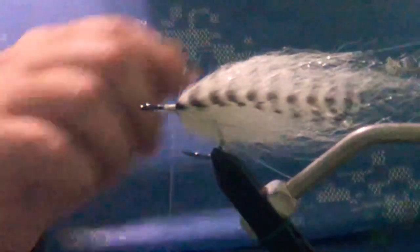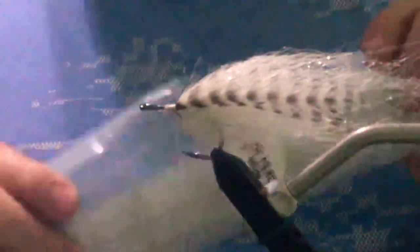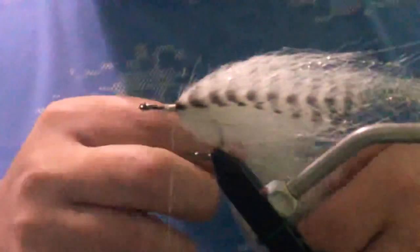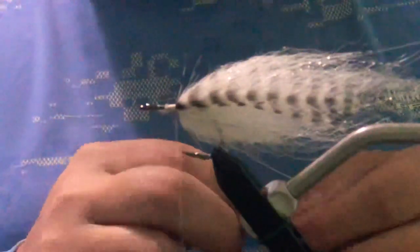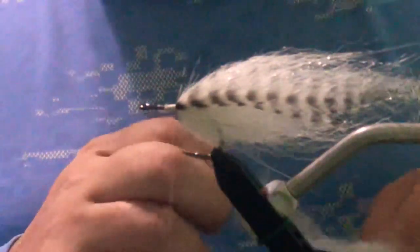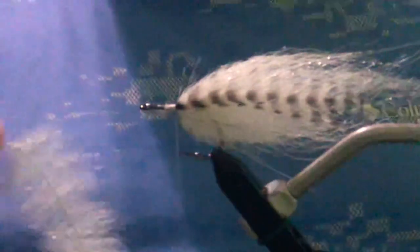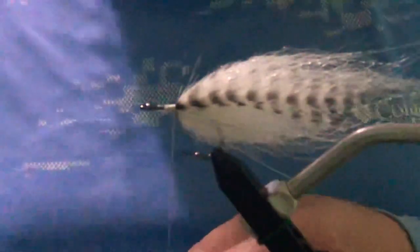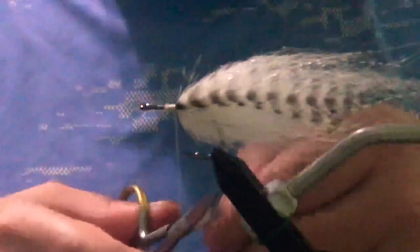The next material we're going to take is EP Minnow Head Brush, the 1.5 inch. And we're going to do just like we did in the step before. Cut off this excess wire and we're going to tie it right in. Bring your thread all the way up to the eye of the hook now.